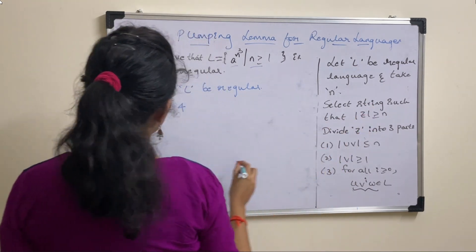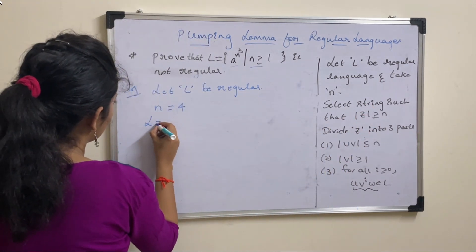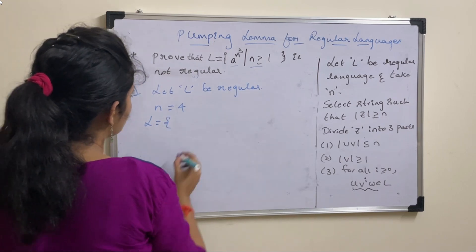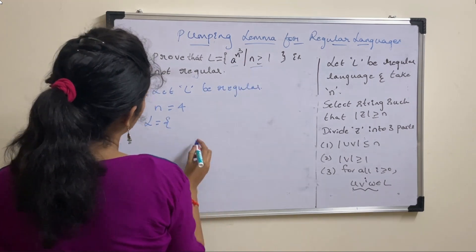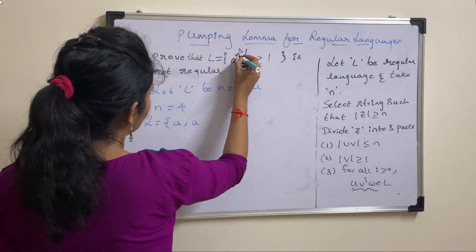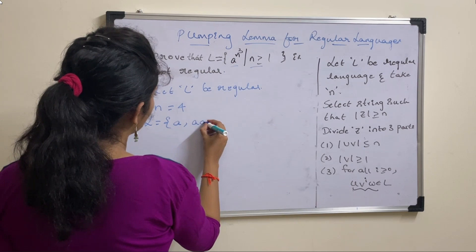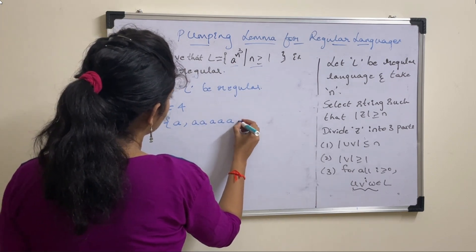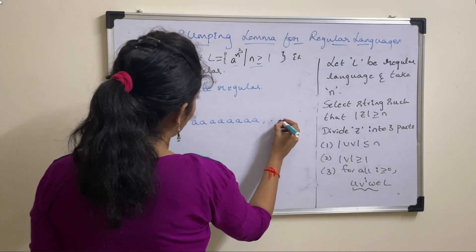Now select string. So in order to select string, first you need to derive strings for the language. So here n value is greater than or equal to 1, so first string is a, and then n value equal to 2, 2 cube means you will get 8, and so on.